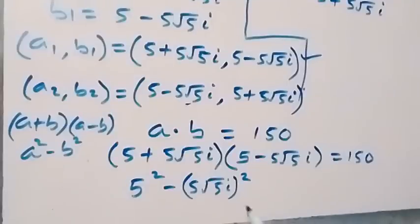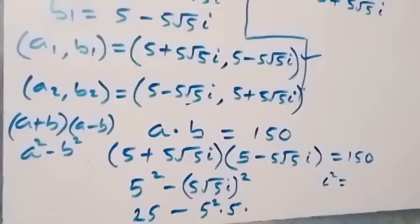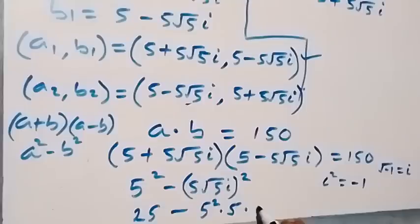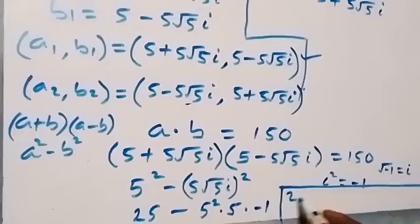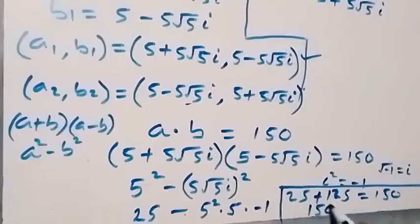This becomes 25 minus (5 squared times root(5) squared times i squared). The square affects each factor: 5 squared is 25, root(5) squared is 5, and i squared is minus 1 since root(minus 1) equals i. So we have 25 minus (25 times 5 times minus 1), which is 25 minus (minus 125). Minus times minus gives plus, so 25 plus 125 equals 150, which equals 150. Left-hand side equals right-hand side.